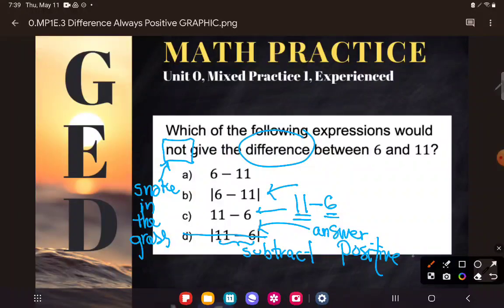And so B will work as well. If I were to do this one, 6 minus 11, no, I wouldn't have a positive answer. I'm taking away more than I have. So 6 minus 11 gives me negative 5.